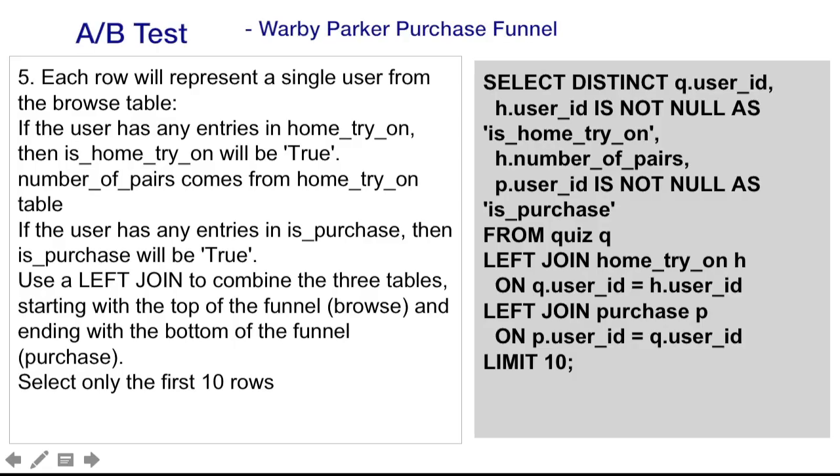For our A-B test we want to join the three tables, the quiz table, home try-on, and purchase. So we're going to select distinct Q for quiz user ID, H for home try-on user ID.